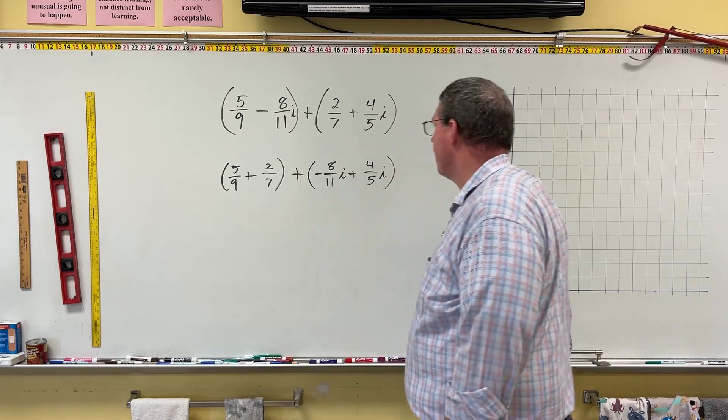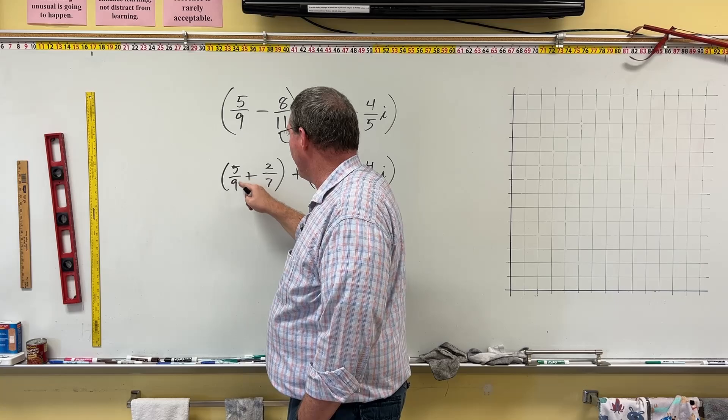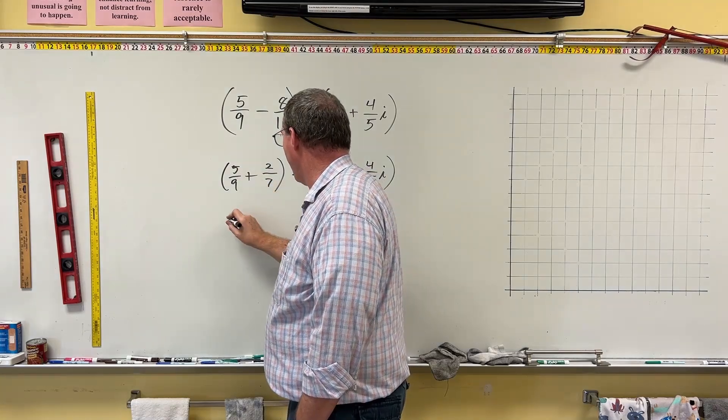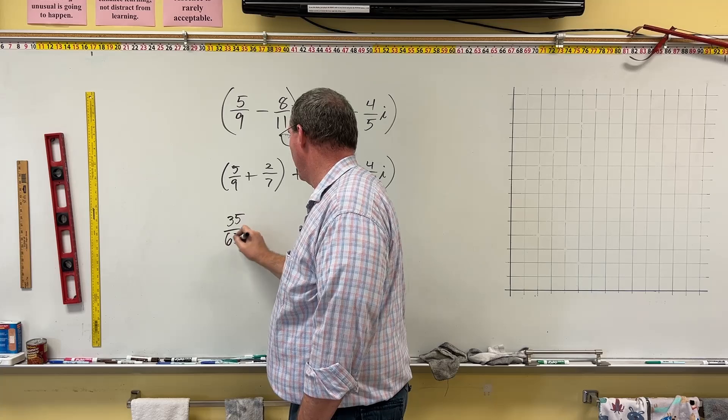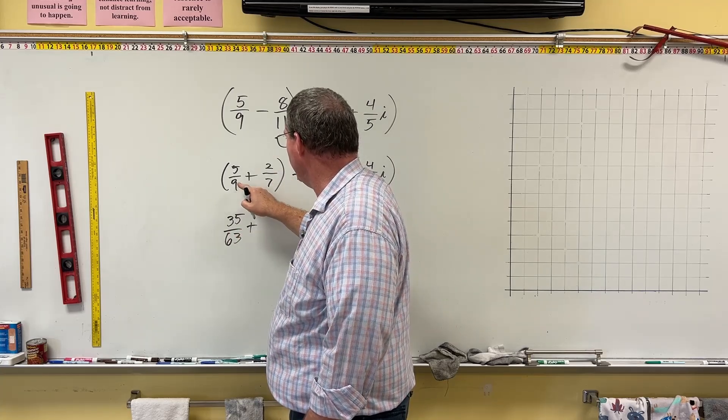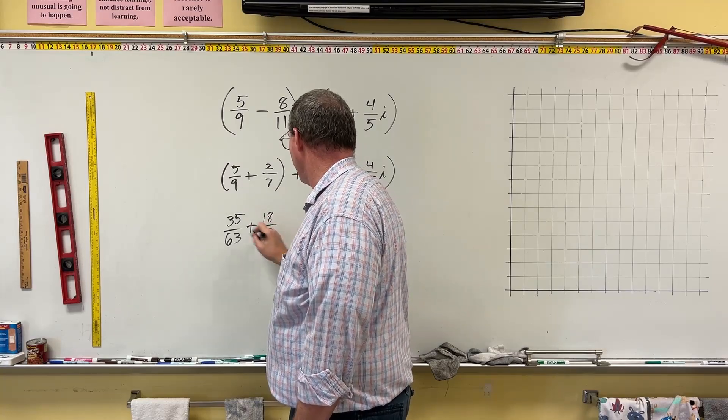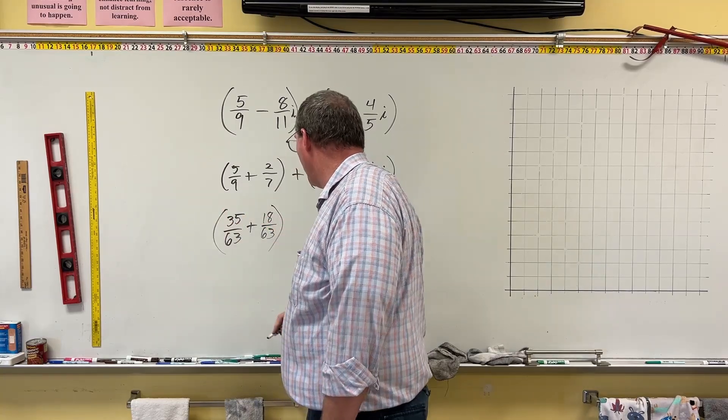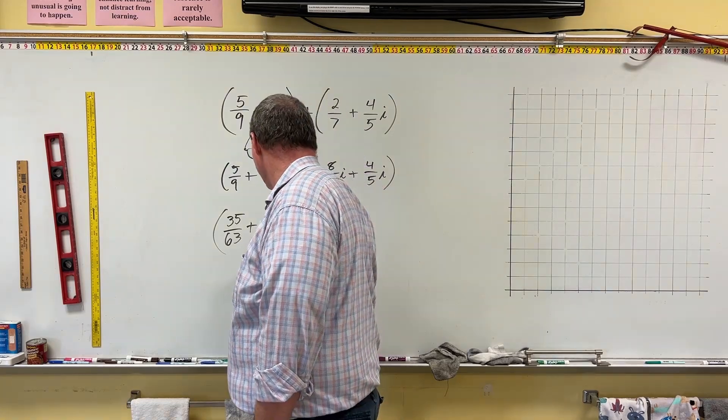Okay, good? Now, over here, this 5 ninths, we've got to multiply the 5 and the 9 by 7. 7 times 5 is 35, over 7 times 9 is 63, plus the 2 and the 7. We're going to multiply it by 9 each. 9 times 2 is 18, over 9 times 7 is 63. And so the real part is going to be 35 plus 18, which is 53 over 63.